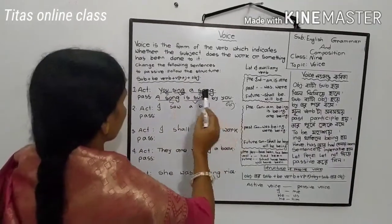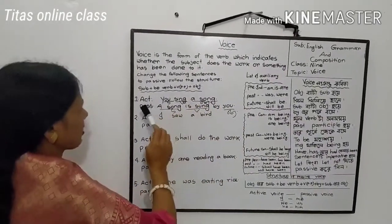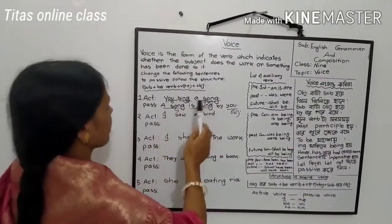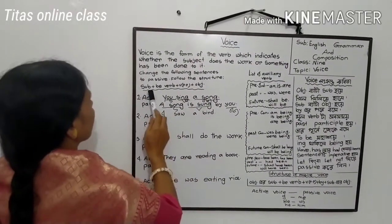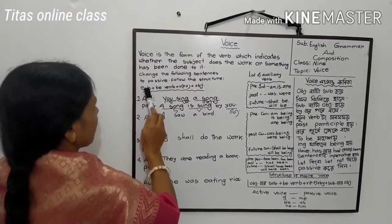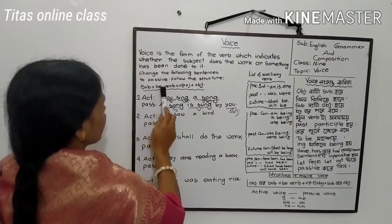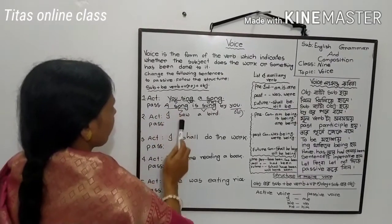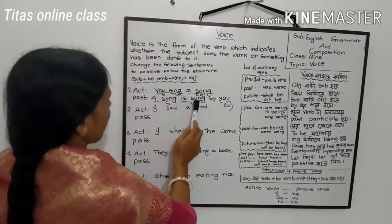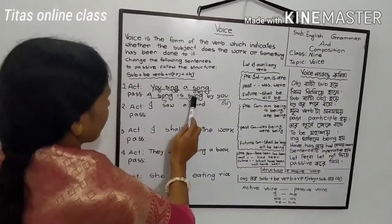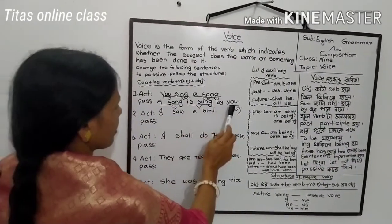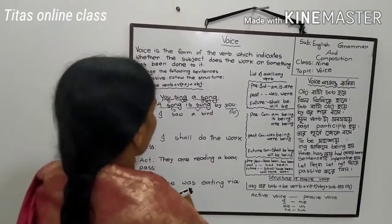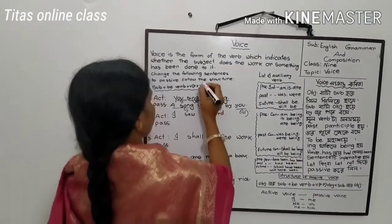We must follow the structure of passive voice: Subject + B-verb + verb in past participle form + by + object.